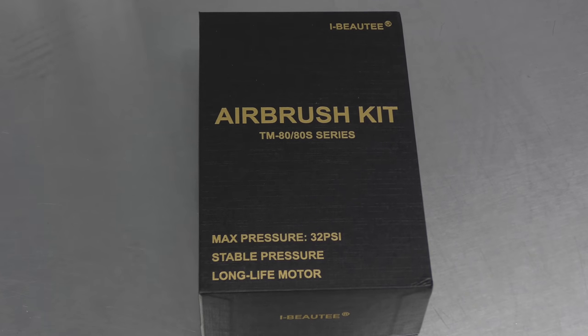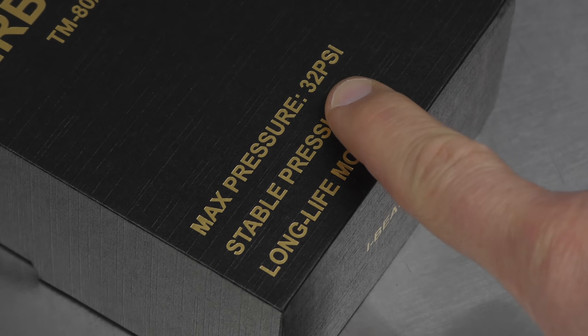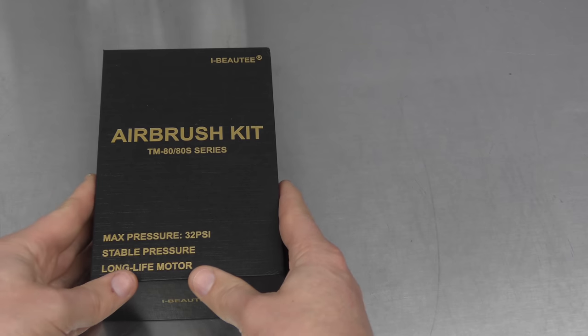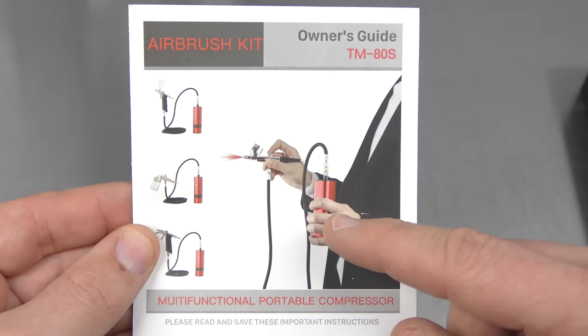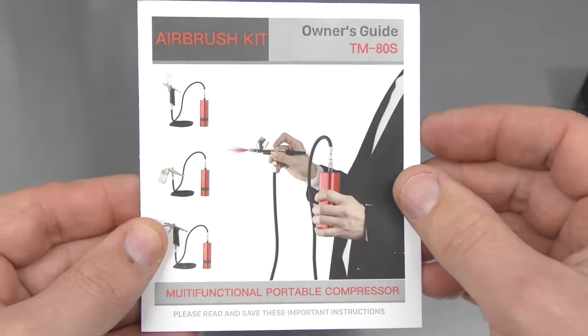So this is the iBeauty cordless airbrush kit. Something that really excites me is the 32 PSI, the stable pressure and the long life motor. Go ahead and take a look what's inside. We have the owner's manual and this is really the one feature that is a game changer in my opinion.